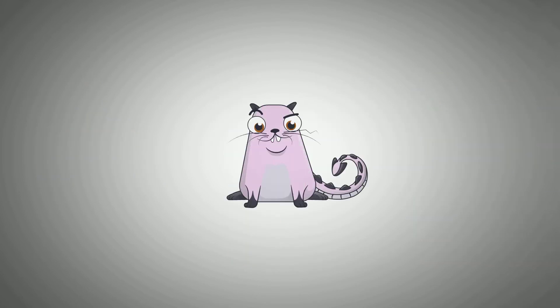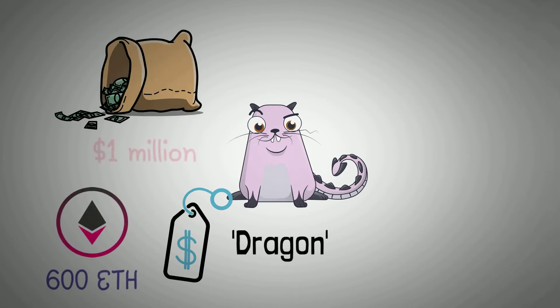As of recently, a pale purple CryptoKittie named Dragon was sold for 600 Ethereum tokens, worth over $1 million.